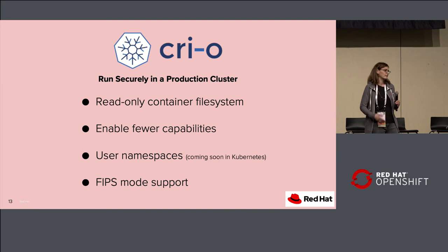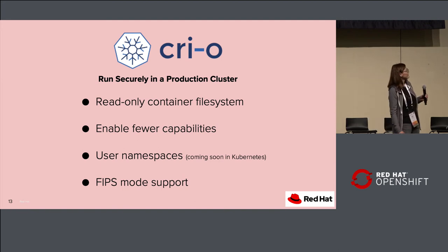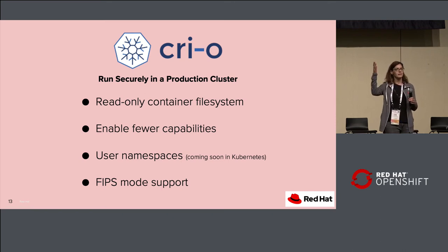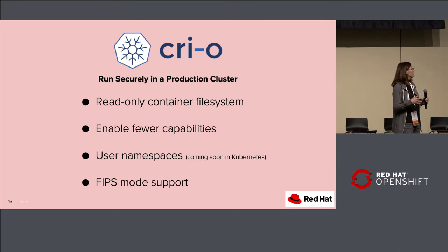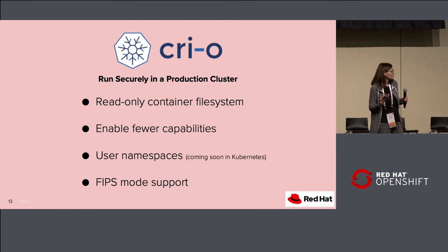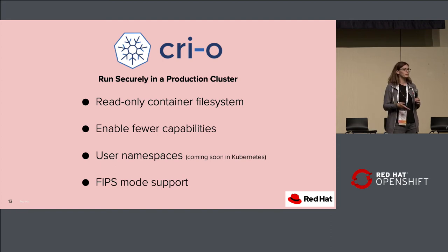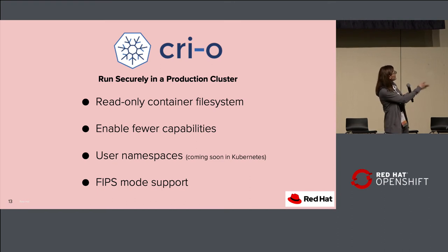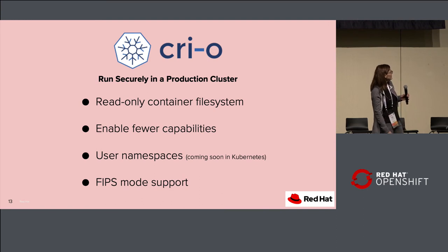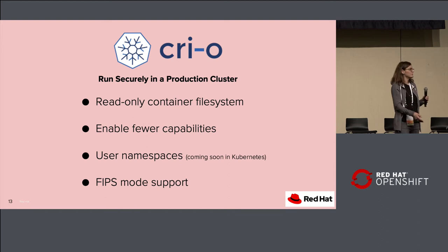Skopeo started out as a command to inspect the JSON file off of a remote registry without having to pull the image down to your system. Before Skopeo, you had to actually pull the image down to see the information. You can get information about tags, who owns it, and when it was published. In the spirit of 'don't run random things on your system,' you can know exactly what you're going to download before you download it. Skopeo stands for 'remote viewing' in Greek.